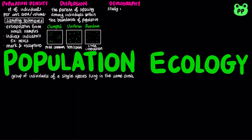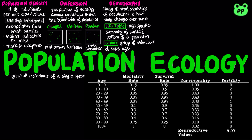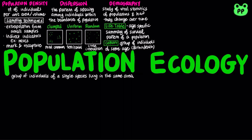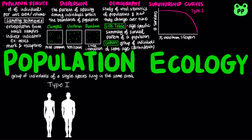Demography is the study of vital statistics of a population and how they change over time. A life table is an age-specific summary of the survival pattern of a population, best made by following the fate of a cohort, which is a group of individuals of the same age. A survivorship curve is a graphic way of representing the data in a life table. Survivorship curves can be classified into three general types. Type 1 exhibits low death rates during early and middle life and then an increase among older age groups — an example would be humans.